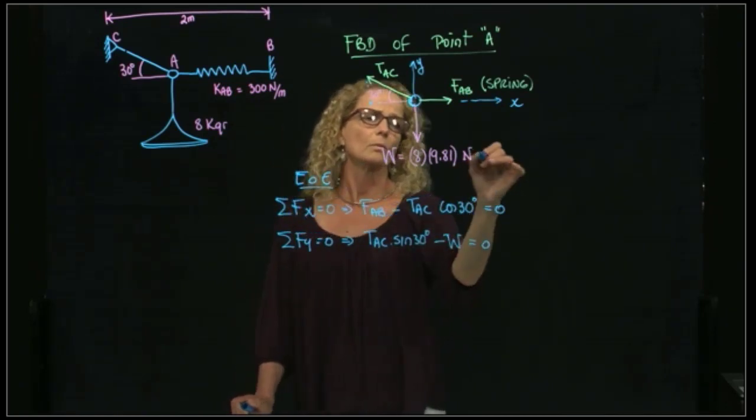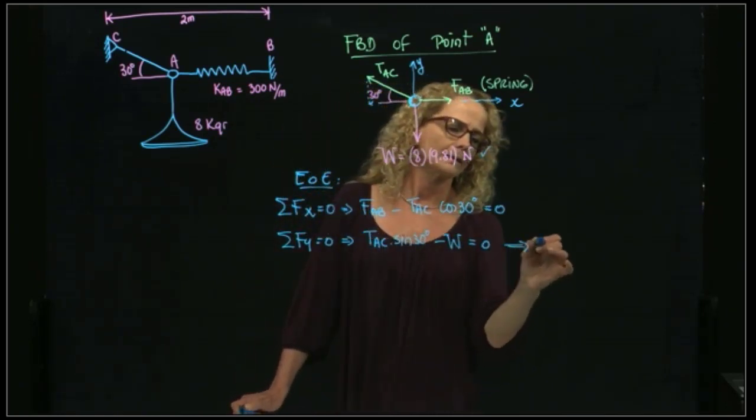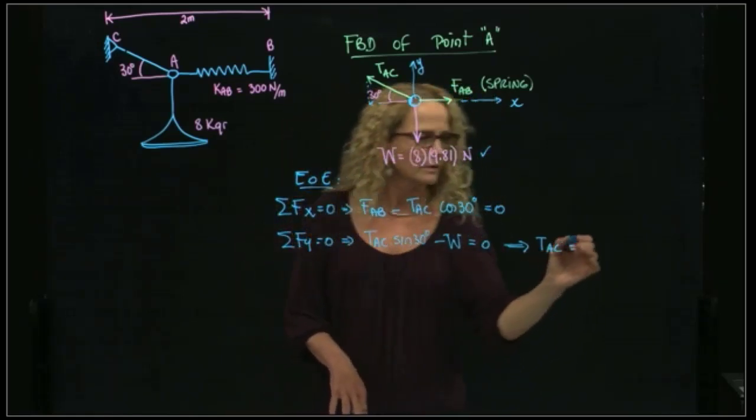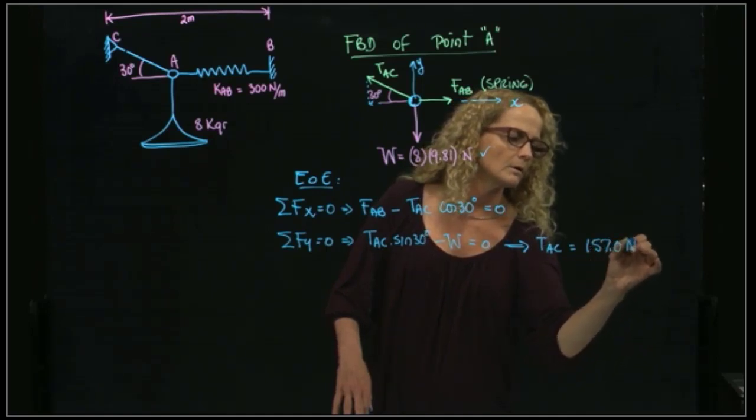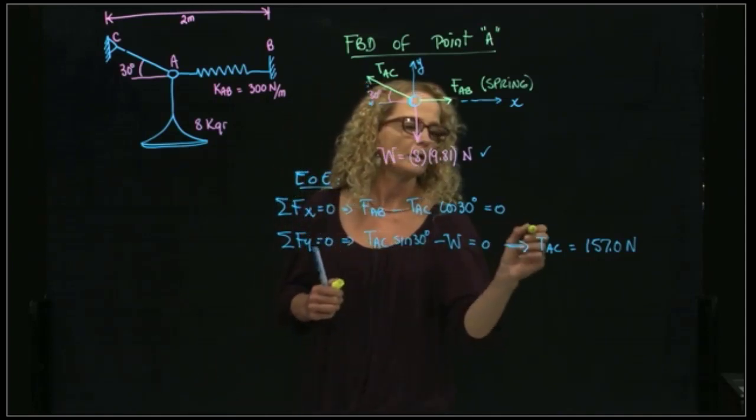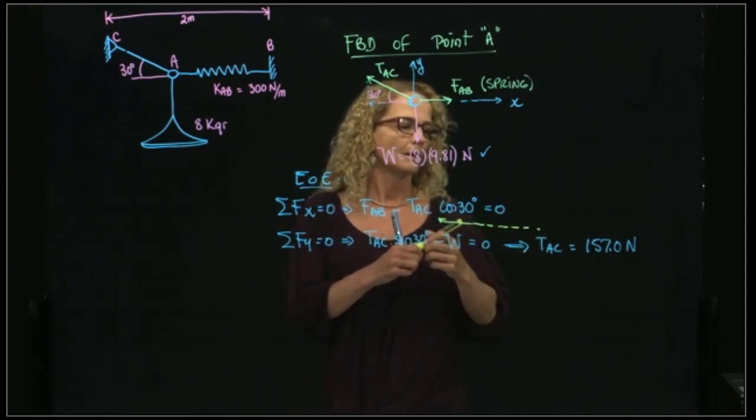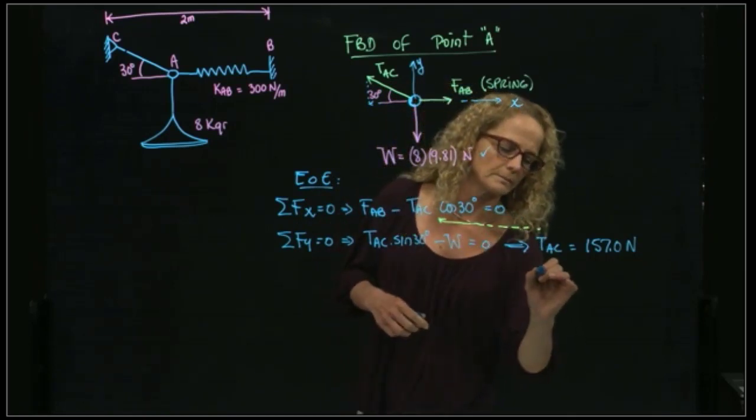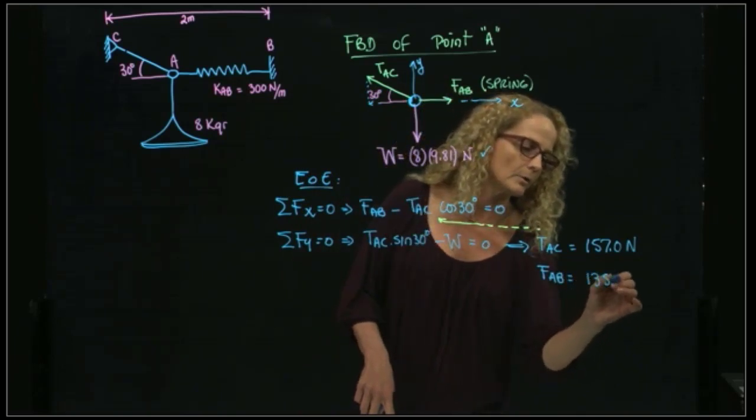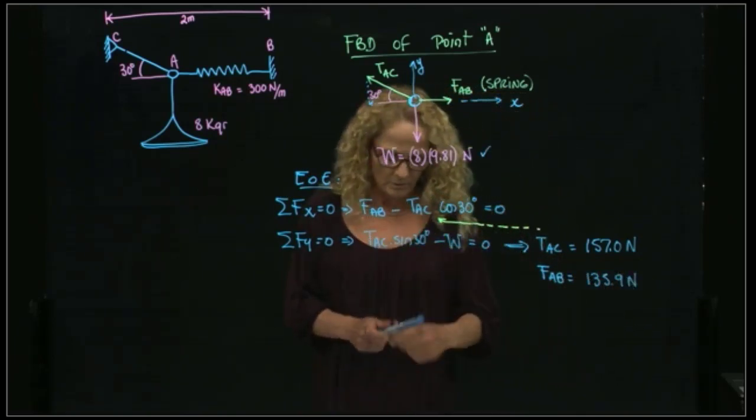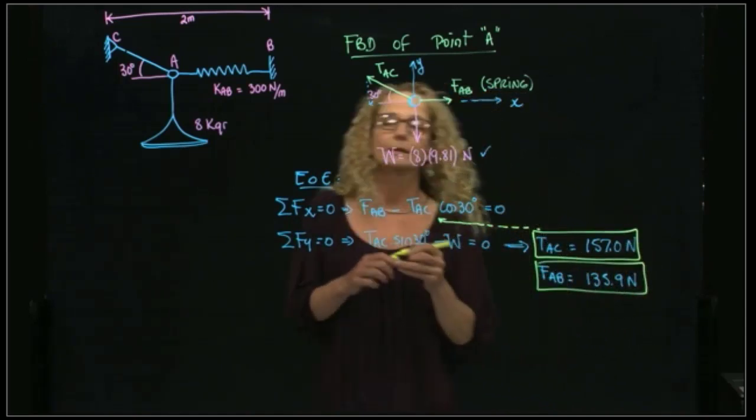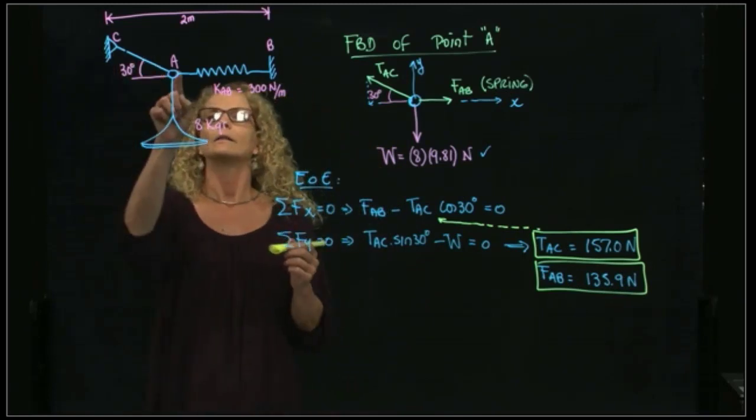So from here, since we know the weight, we can get the tension of the chord, which I already calculated, which is 157 newtons. And once we have that, we can plug it into here. And then we have the force of the spring, and the force of the spring is equal to 135.9 newtons. So we were able to find those two forces: the tension of the chord and the force of the spring.